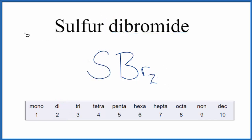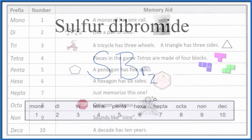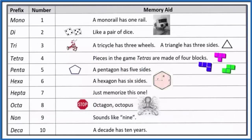Note that we don't put mono in front of sulfur, even though we only have one sulfur. For the first element in a molecular compound, we don't use mono. If you need help memorizing these prefixes, this table should help you do that.